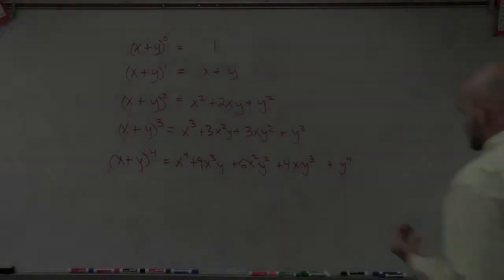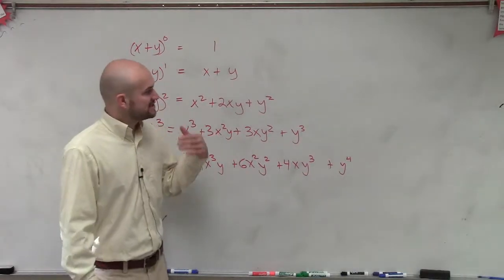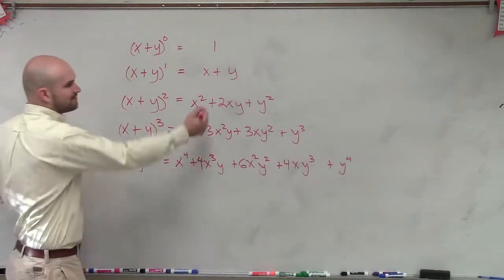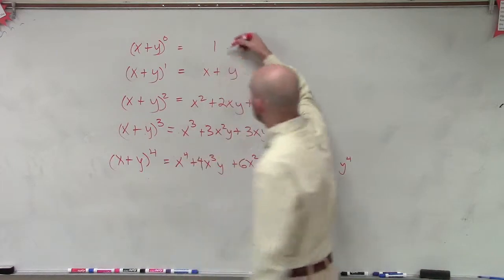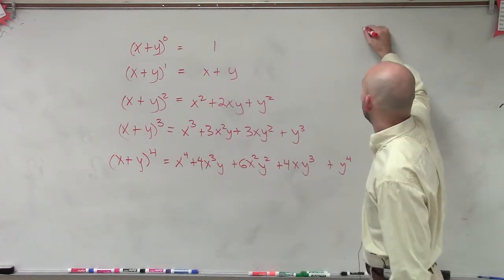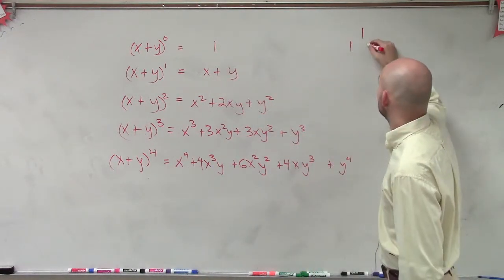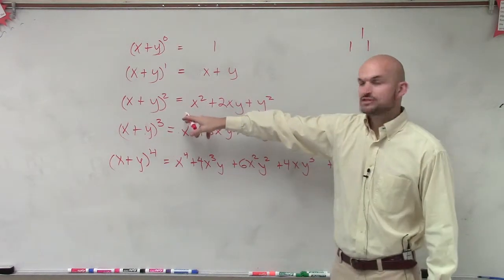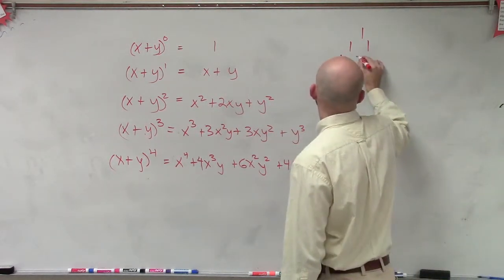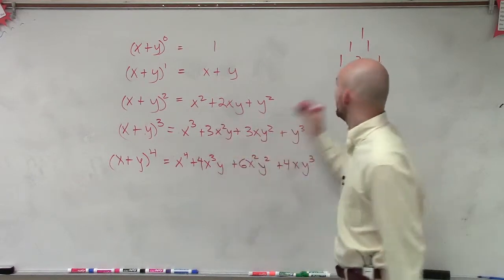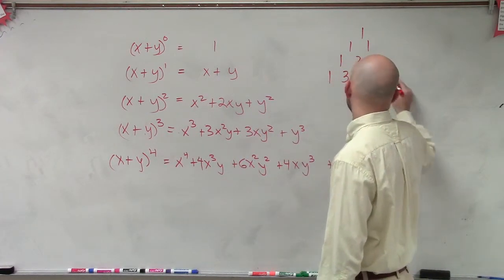What I have is Pascal's Triangle. What they were able to do is start writing down what the coefficients were for each term in our expansion. Well here, obviously, you're going to have 1. The coefficients of these two is 1 and 1. Then the coefficients here go 1, 2, 1. And then the next one was 1, 3, 3, 1.